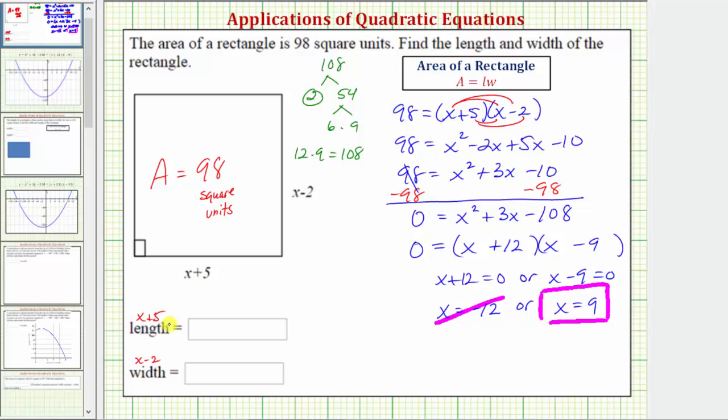We can find the length and the width. If the length is x plus five, and x equals nine, we have nine plus five, which equals 14 for the length. If the width is x minus two, when x equals nine, we have nine minus two, which equals seven.